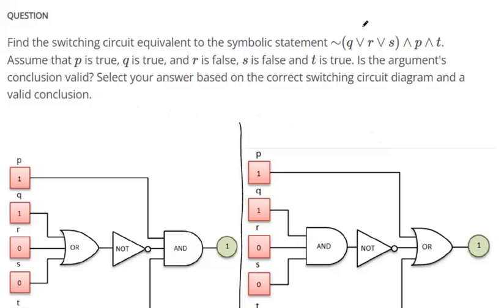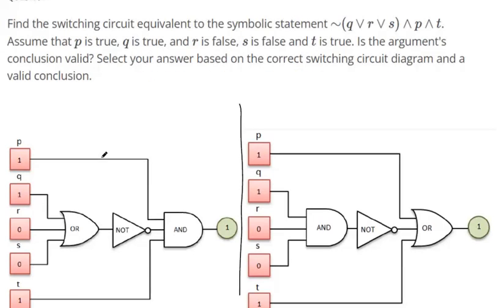We're supposed to find a switching circuit that's equivalent to this one, Q or R or S. That should connect Q, R, and S with an OR statement. That's what these V's represent, Q or R or S.